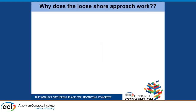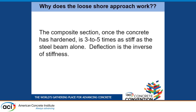Why does loose shoring work? We're stopping the movement of the beam while the concrete is still plastic. The beam was carrying the load until the shore stopped the movement and started picking up the load. When you have composite behavior, once the concrete hardens, you've got a composite section — the steel beam and the floor framing on either side — that is three to five times as stiff as the beam by itself. So if you would have had an inch of over-deflection and you stop it at level, you might only get a quarter of an inch of additional movement when you pull the shores.